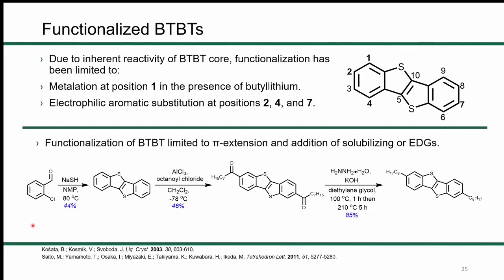The reality is this synthesis doesn't really work well for generating these materials, as I can say from experience, due to the inherent reactivity of the BTBT core. Reactivity is generally limited to lithiation at position 1 or electrophilic aromatic substitution at positions 2, 4, and 7. The typical approach for synthesizing alkyl derivatives is Friedel-Crafts alkylation at the 2 and 7 positions to give 2,7-dialkyl BTBT. Even the reported 85% yield is generous — the product isn't pure enough for devices and typically requires multiple sublimation or recrystallization steps, which drives up the cost.